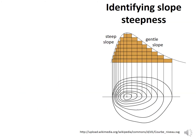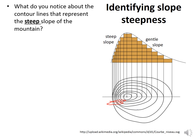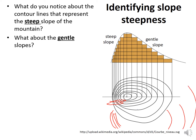Identifying slope and steepness: a steep slope has very tight contour lines, and a gentle slope has wider, more spread-out lines. What do you notice about contour lines that represent a steep slope? The contour lines get really close together when it's steep. When it's gentle, there are gaps in between.